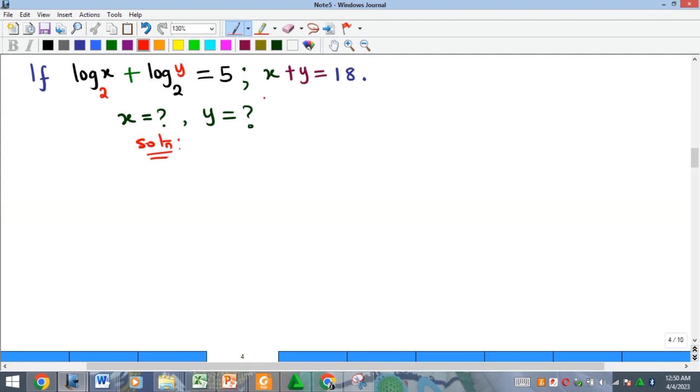Immediately you see two equations, you should be aware that you are actually going to solve simultaneous equations. Once you have two equations and two variables, it means that you need to solve simultaneously to get the values of the two variables.